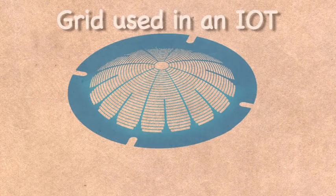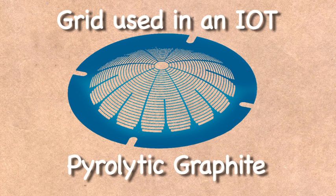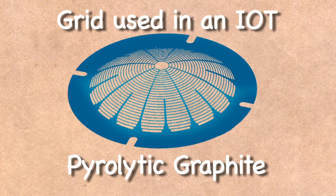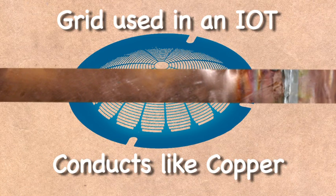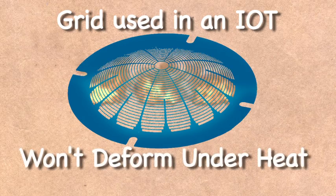The actual grid is made of pyrolytic graphite. It is shaped to fit the concave cathode and is mounted very close to it, about 0.01 mm in fact. The pyrolytic graphite conducts like copper, but can handle the heat of the cathode without deforming.